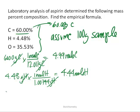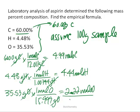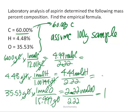For oxygen: 35.53 grams ÷ 15.9994 g/mol gives us 2.22 moles of oxygen. Moles of oxygen is our lowest number, so we divide everything by 2.22. Oxygen divided by 2.22 gives 1; hydrogen gives 2; and carbon comes out to 2.25. So the molar ratio is 2.25 to 2 to 1, but we need whole numbers for the empirical formula.